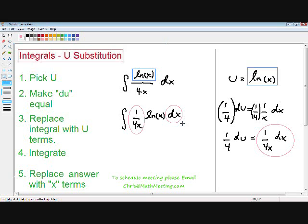So now let's move on to step number 3. Now we need to replace the integral with our u terms. Now I hope you remember from the beginning that we picked our u as the natural log of x. So I'm going to rewrite the natural log of x as u. And I hope you remember from our du equation that 1 over 4x dx is equal to 1 over 4 du. So I'm going to replace the 1 over 4x dx as 1 over 4 du.